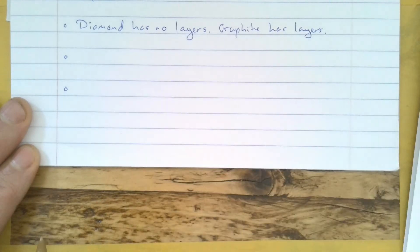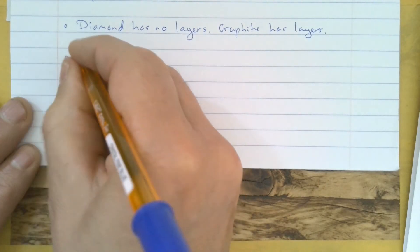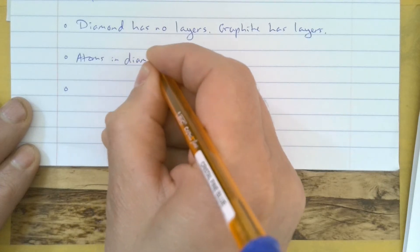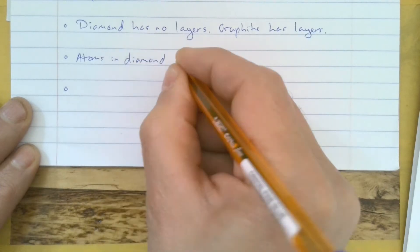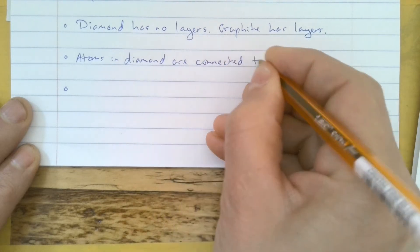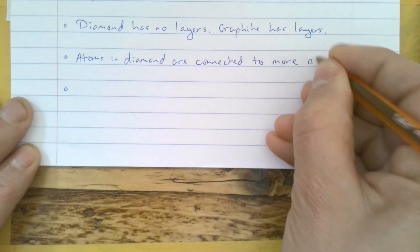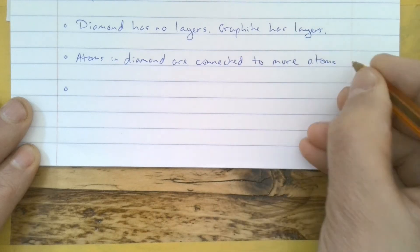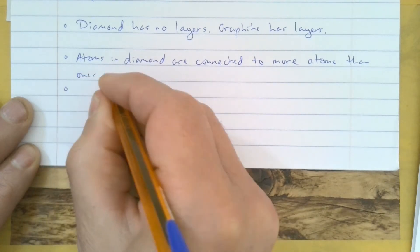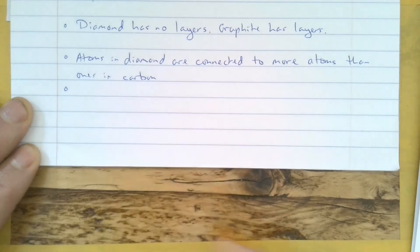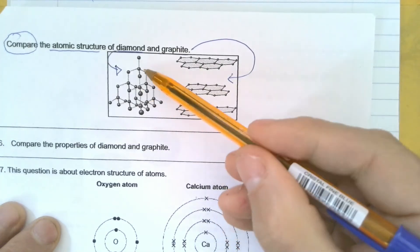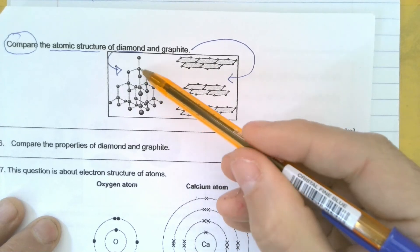What else can we see? Well, we can see that atoms in diamond are connected to more atoms than ones in carbon. Okay, so if we look here at the diagram, it looks like the atoms inside here are connected to one, two, three, four different atoms here.